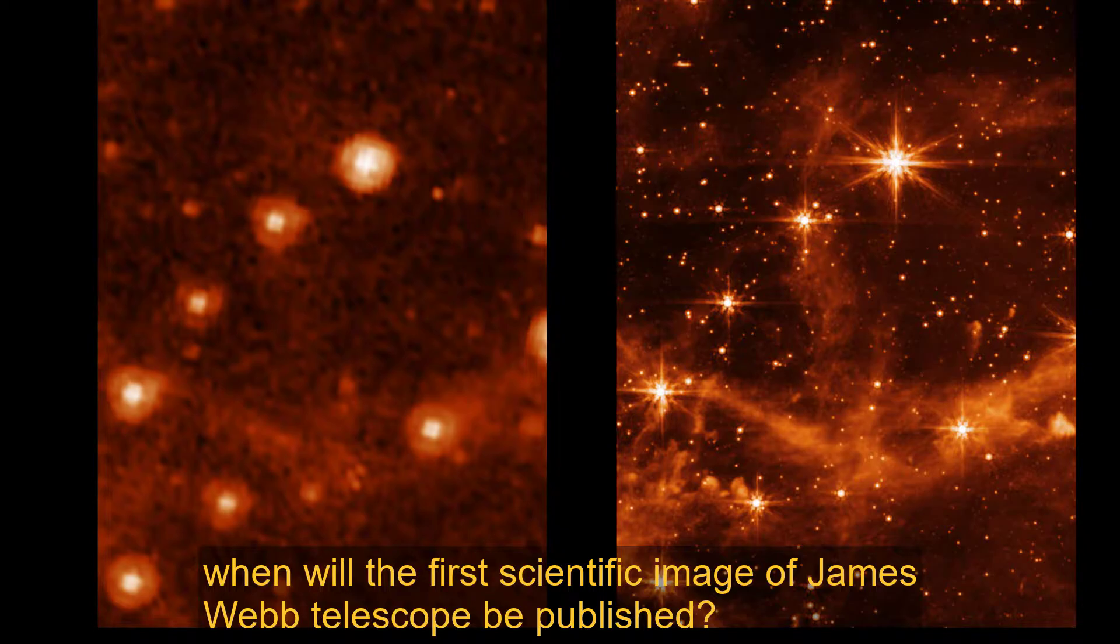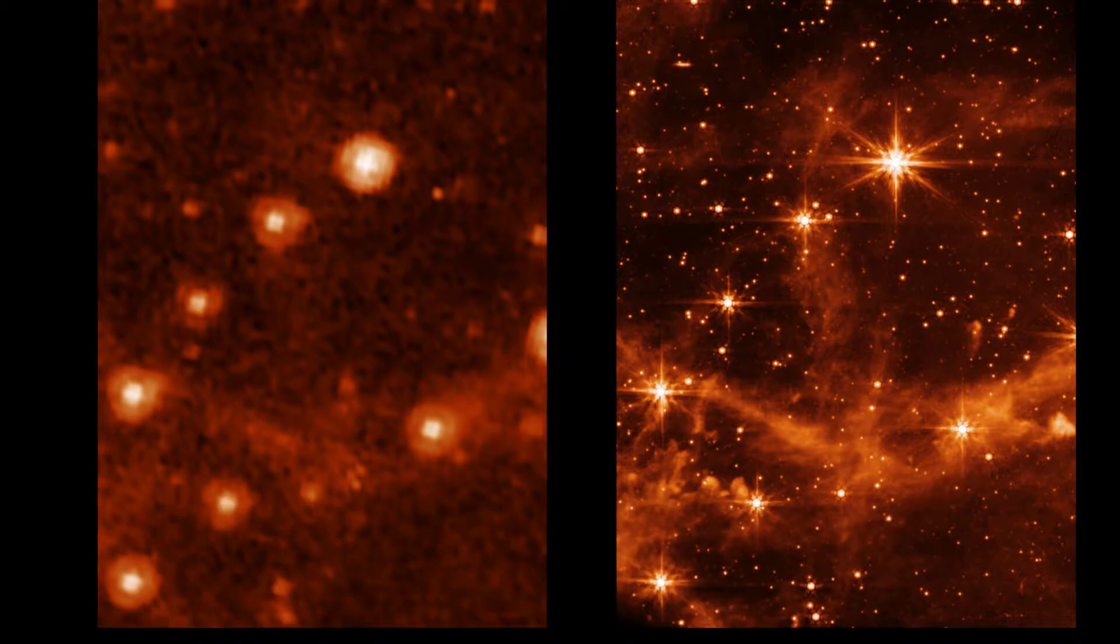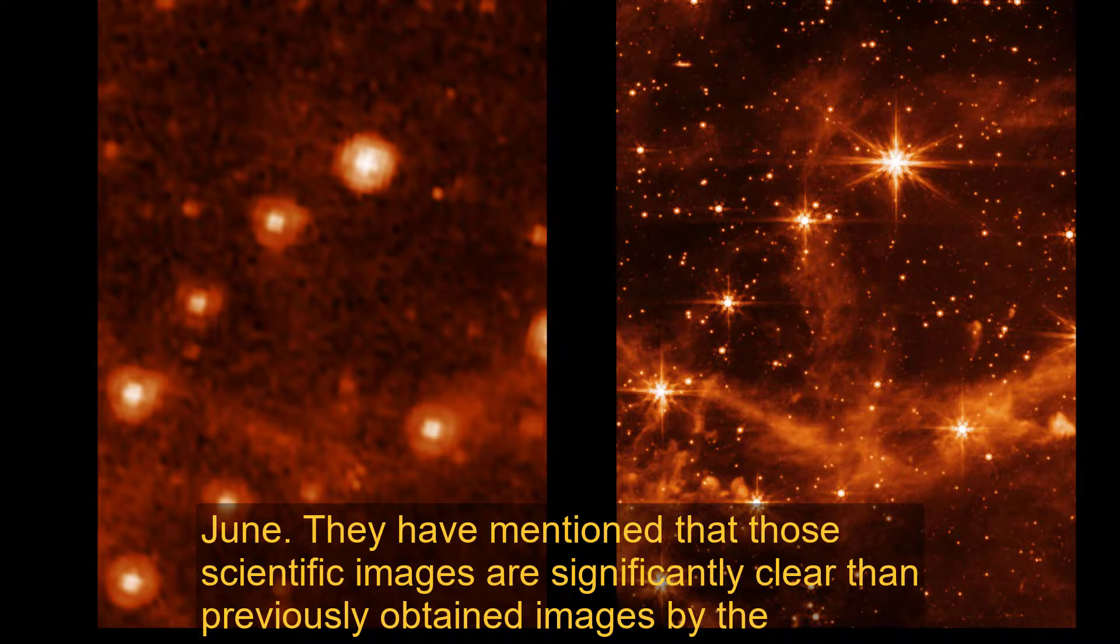When will the first scientific image of James Webb Telescope be published? NASA gave an answer on June 1st. They said that the first scientific images of James Webb Telescope are to be published on June 12th. They mentioned that those scientific images are significantly clearer than previously obtained images.